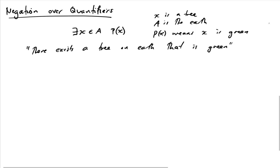What would the negation of this statement be? If you stop trying to think in symbols, your common sense can work this out quickly. The statement is 'there exists a tree on earth that is green,' so the negation would be that there is no green tree on earth — or equivalently, all trees on earth are not green.